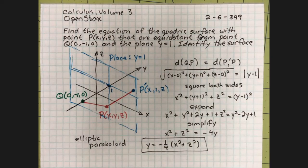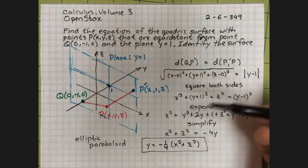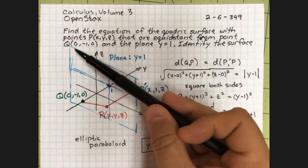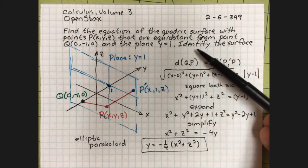So the question says, find the equation of a quadric surface with points P(X, Y, Z) that are equidistant from the point Q(0, -1, 0) and the plane Y equals 1. What surface is this?